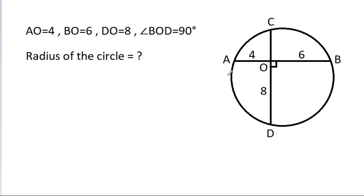In this video, we have given that AO is 4, BO is 6, DO is 8, and angle BOD is 90 degrees. Then the radius of the circle is equal to what?